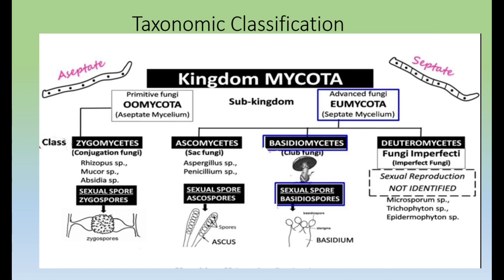Phycomycota has only one class, which is Zygomycetes. Zygomycetes are also known as conjugation fungi, because conjugation is their method of reproduction. Species in this class include Rhizopus, Mucor, and Absidia. Their sexual spores are called zygospores, as discussed in the reproduction video.